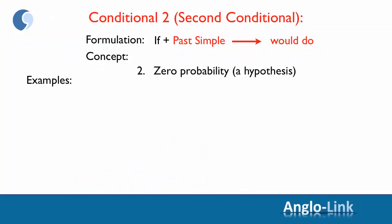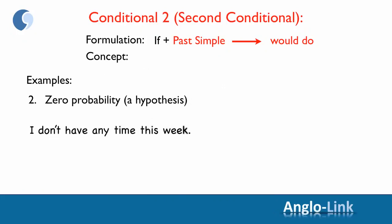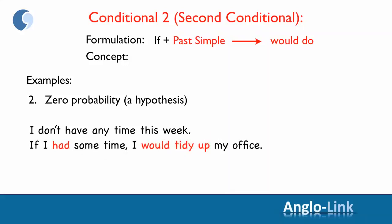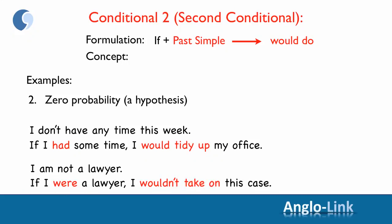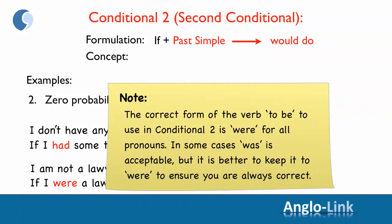Let's look at some examples of zero probability or a hypothesis. 'I don't have any time this week, but if I had some time, I would tidy up my office.' Or a completely unreal or hypothetical situation: 'I'm not a lawyer. If I were a lawyer, I wouldn't take on this case.' Note that the correct form of the verb 'to be' in conditional two is 'were' for all pronouns. In some cases 'was' is acceptable, but it is better to use 'were' to ensure you are always correct.